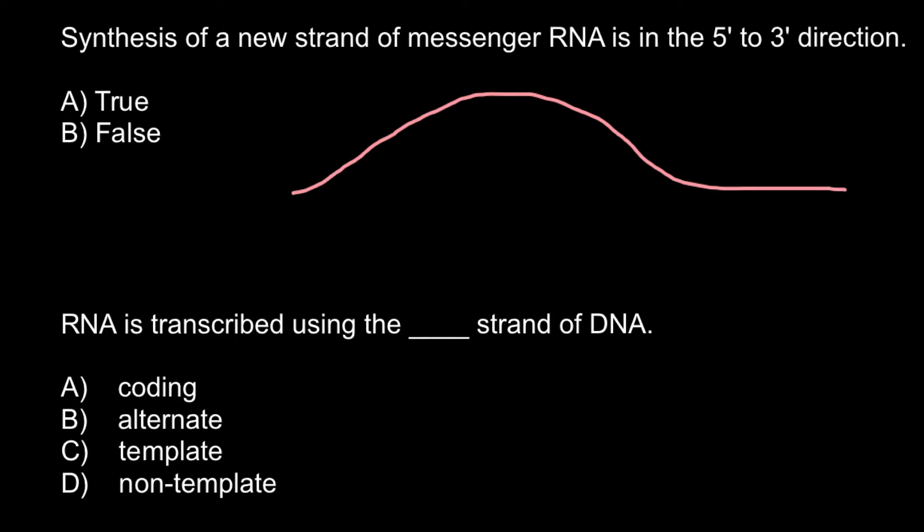It is opened because here messenger RNA is synthesized, and messenger RNA is synthesized continuously in one direction. So here we would have 5 prime end and here we would have 3 prime end.